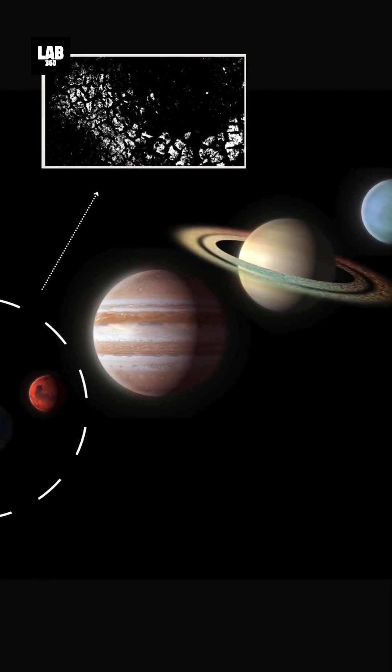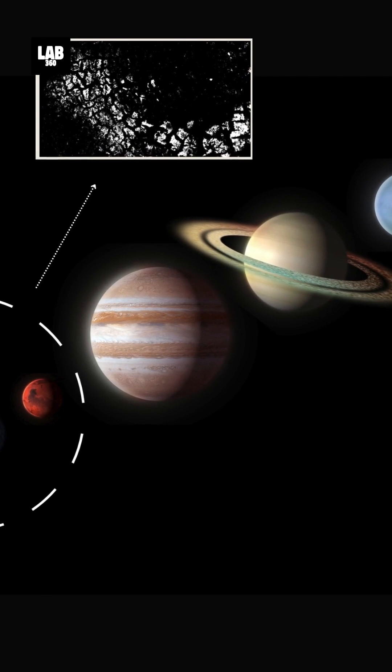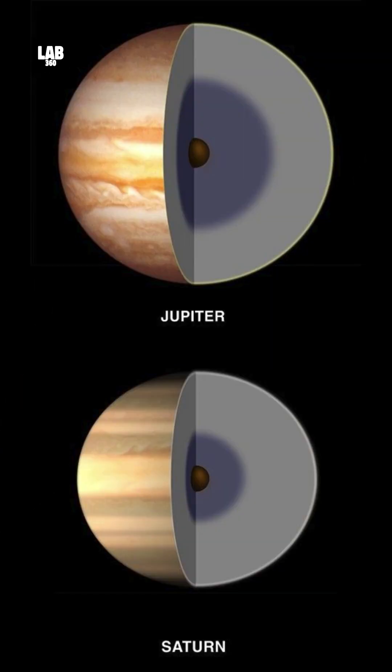Farther out, beyond the frostline, ice allowed gas giants like Jupiter and Saturn to grow massive, hoarding light gases like hydrogen and helium.